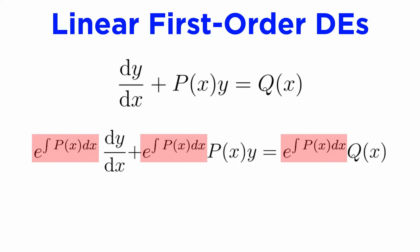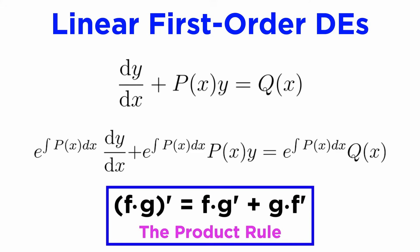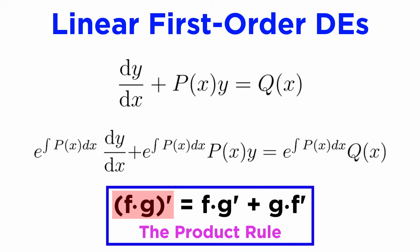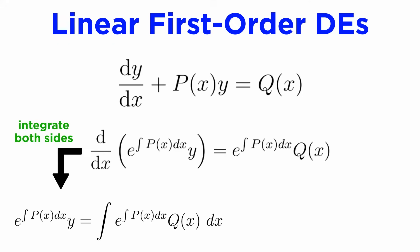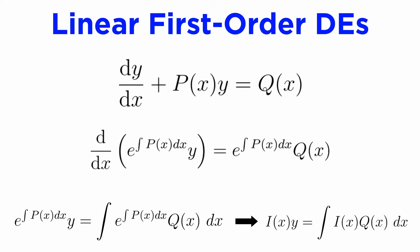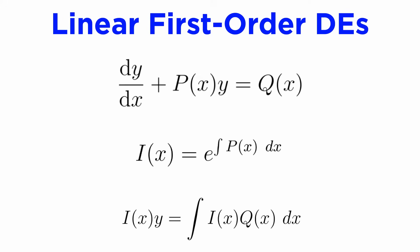Let's take our general form and multiply both sides by the integrating factor we've just defined. If you stare at this expression long enough, you might notice that the left side looks a bit like the product rule from differential calculus. If we let our integrating factor be f and our dependent variable be g, then the product rule gives the derivative of the product f times g as exactly this expression. We can therefore replace it all with this derivative of our product, integrate both sides with respect to x, and replace the integrating factor with the symbol i(x) to get a tidy formula: i·y equals the integral of i·q.